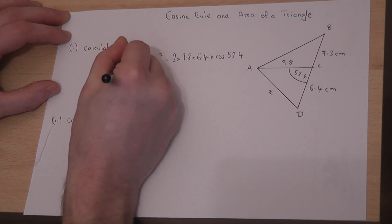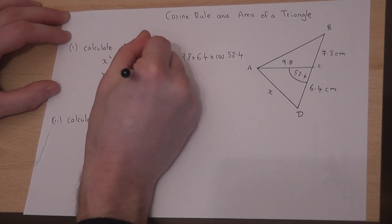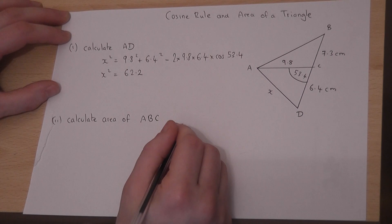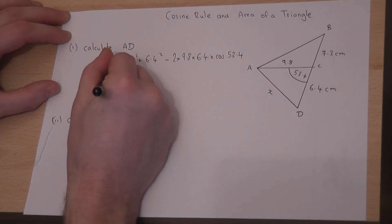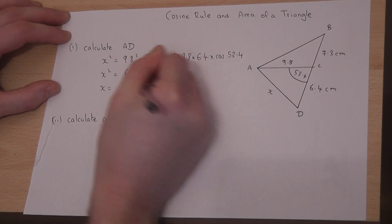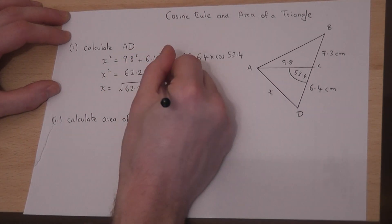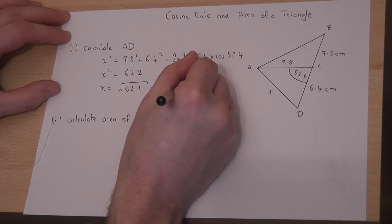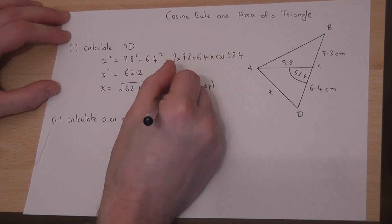This gives us that x squared is equal to 62.2. So to find x we just do the square root of 62.2 which works out at 7.9 centimetres to 1 decimal place.